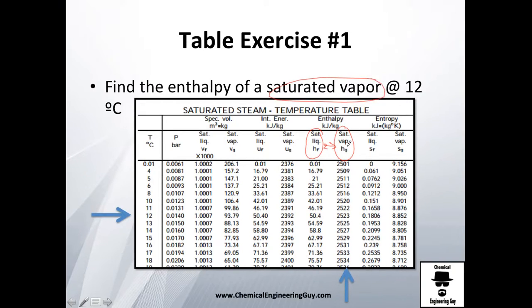Since we're talking about saturated vapor, let's choose this column, and the actual value of that specific enthalpy will be 2523 kilojoules per kilogram of vapor.